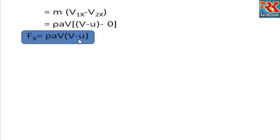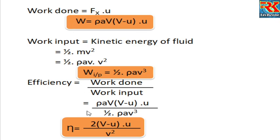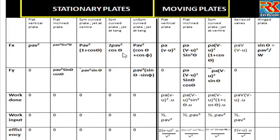For the series of vanes: Fx equals rho A V into (v minus u). Work done, work input, and efficiency are tabulated. The equations include Fx, Fy, work done, and efficiency. In the next video, we will solve problems based on this chart.